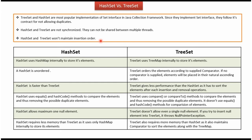Now we will see the difference between the HashSet and TreeSet. HashSet uses HashMap internally to store its elements, while TreeSet uses TreeMap internally to store its elements. HashSet is unordered. TreeSet is ordered — it orders the elements according to the supplied comparator. If no comparator is supplied, then elements will be placed in ascending order.